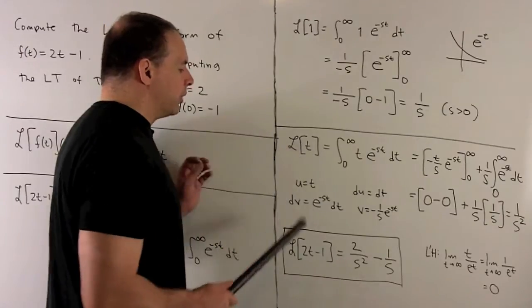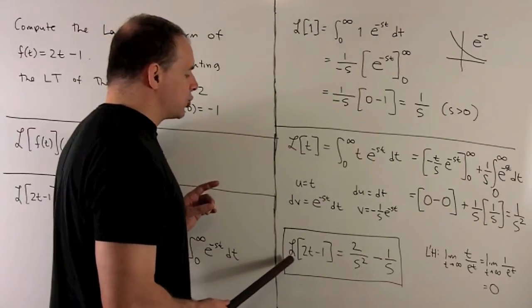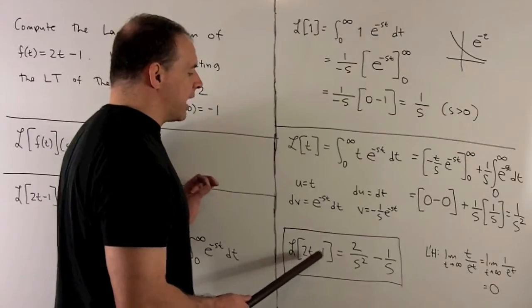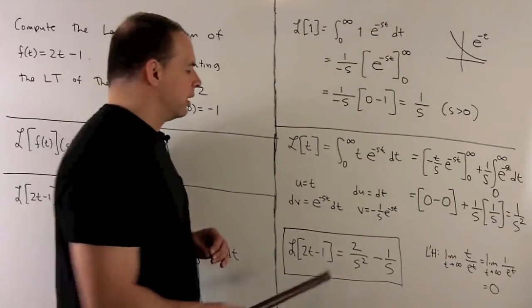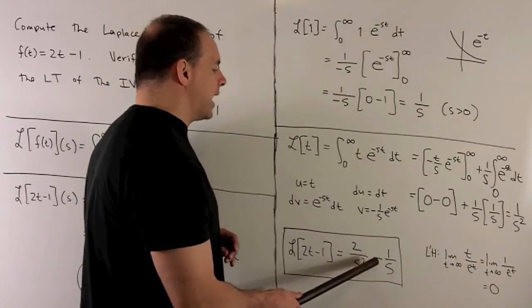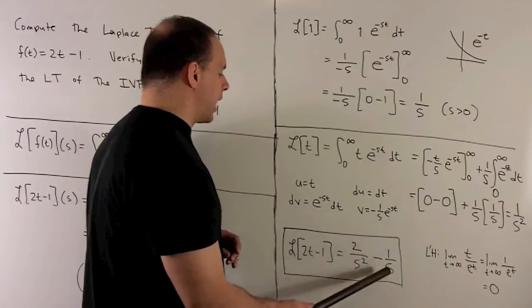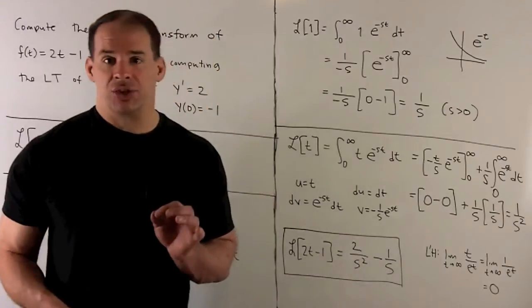Putting everything back together, the Laplace transform of 2t minus 1 equals 2 over s squared minus 1 over s. That's our answer.